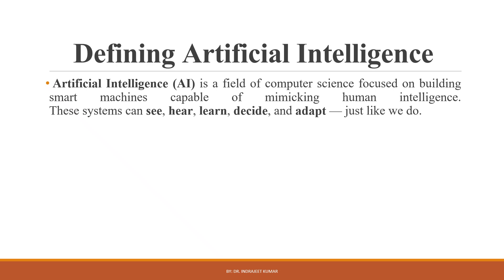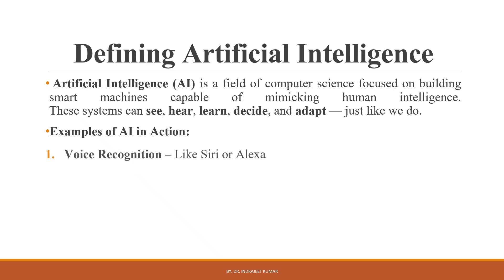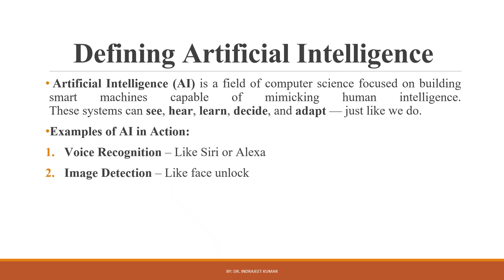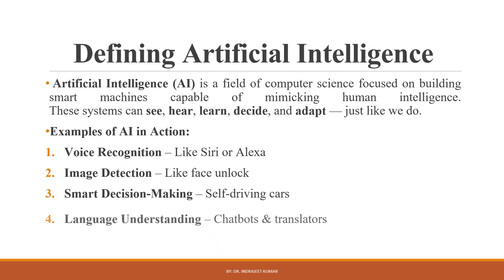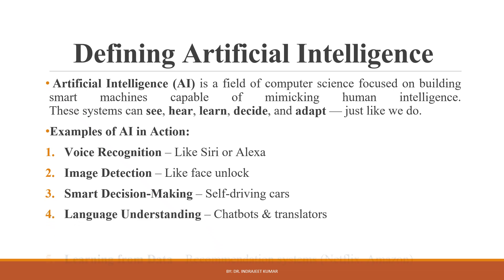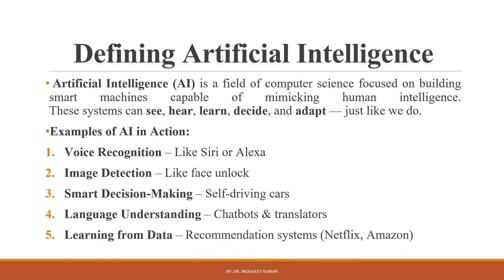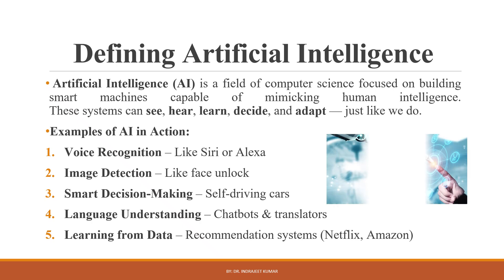The system can see, hear, learn, decide and adapt just like we do. Examples of AI include voice recognition like Siri or Alexa, image detection like face unlock, smart decision making, self-driving cars, language understanding, chatbots and translators, learning from data, and recommendation systems like Netflix and Amazon.